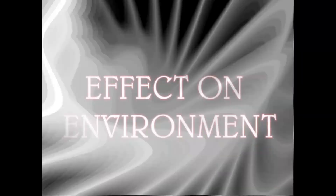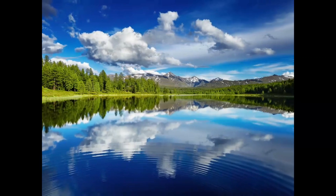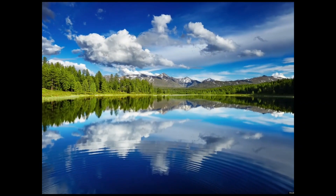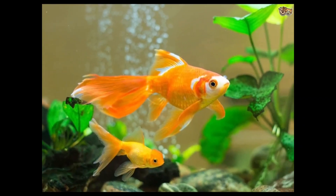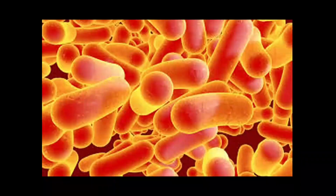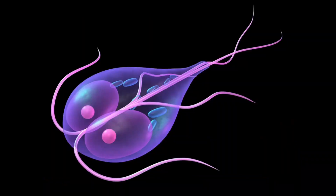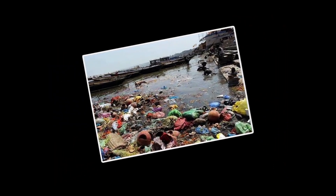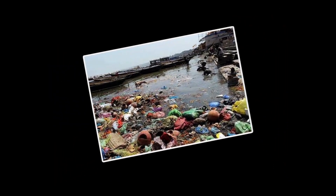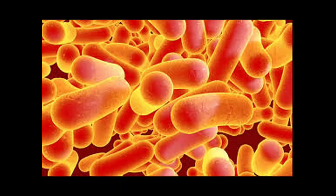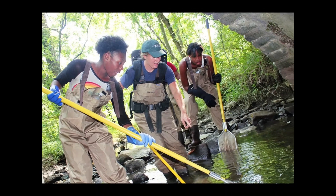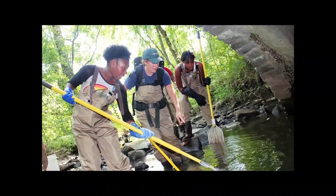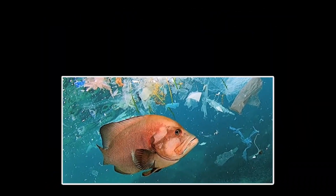On the environment: in order to thrive, healthy ecosystems rely on a complex web of animals, plants, bacteria, and fungi, all of which interact directly or indirectly with each other. Harm to any of these organisms can create a chain effect, imperiling entire aquatic environments.